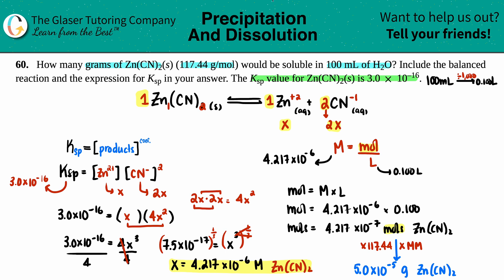That is your answer. How many grams of zinc cyanide? 5.0 times 10 to the negative 5th grams.